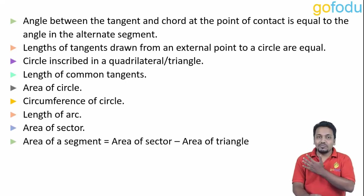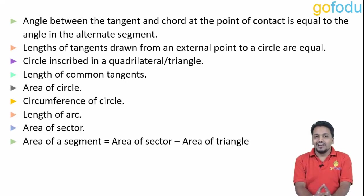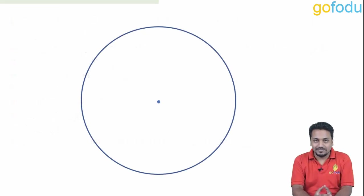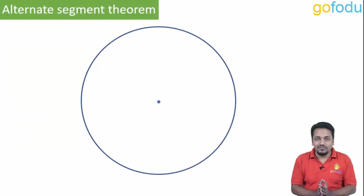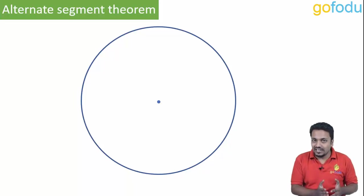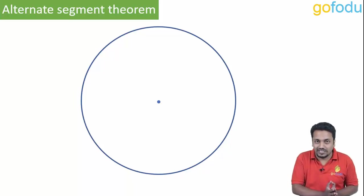These are the properties that we will be discussing in this video. Let's start with the first one: the Alternate Segment Theorem, which says that the angle between the tangent and chord at the point of contact is equal to the angle in the alternate segment.